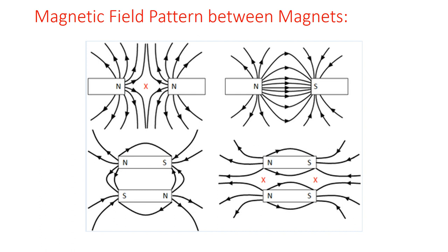Between like poles, the magnetic field lines are in the same direction. This causes them to oppose each other, creating a region of zero magnetic field between them — which is why like poles repel. Between unlike poles, the field lines from each pole go in different directions and connect together, with the lines close together in the middle, making the field very strong. That is why unlike poles attract each other.